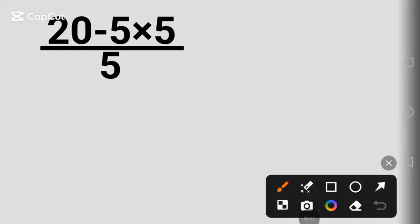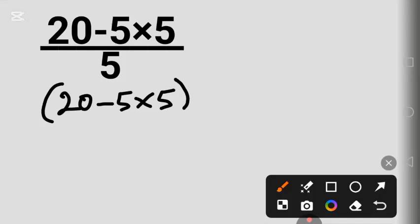Hello my friends, we have a cool math question here. Let's solve it together: 20 minus 5 times 5 in the numerator, divided by the denominator.